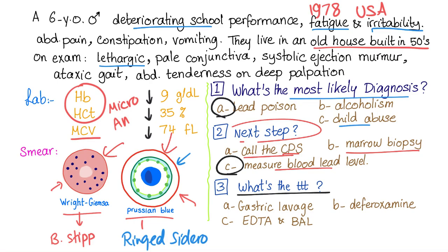What is the treatment of lead poisoning? Gastric lavage? No, because this is a chronic lead exposure. Deferoxamine is used to treat iron toxicity or iron overload, not lead. The treatment is EDTA and BAL — BAL is dimercaprol, and EDTA is ethylenediaminetetraacetic acid.